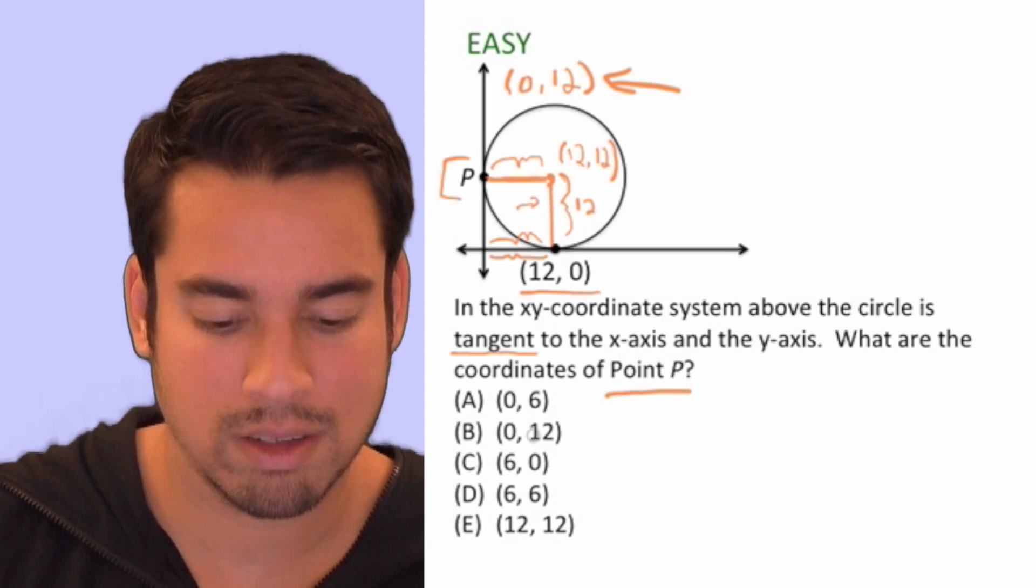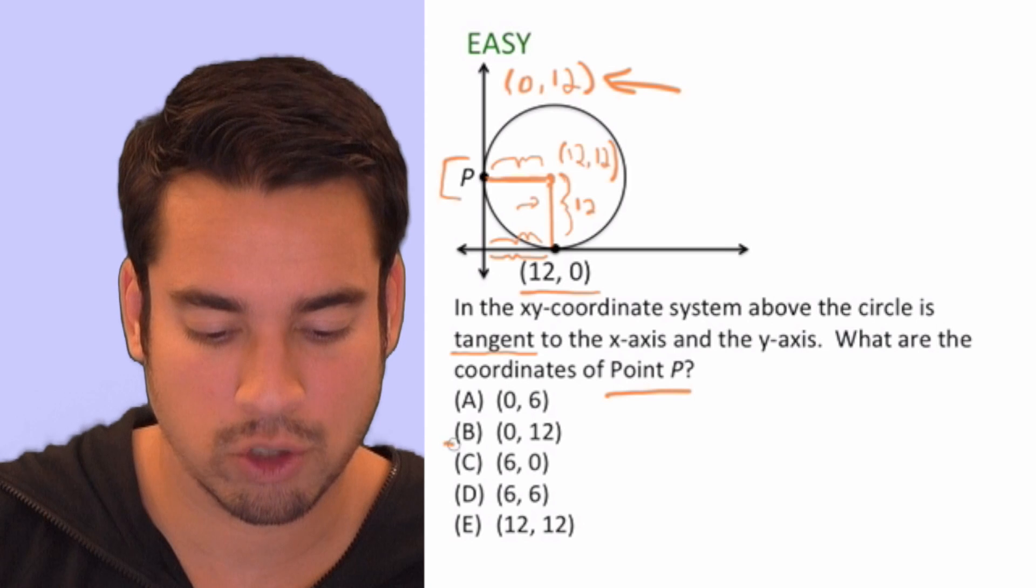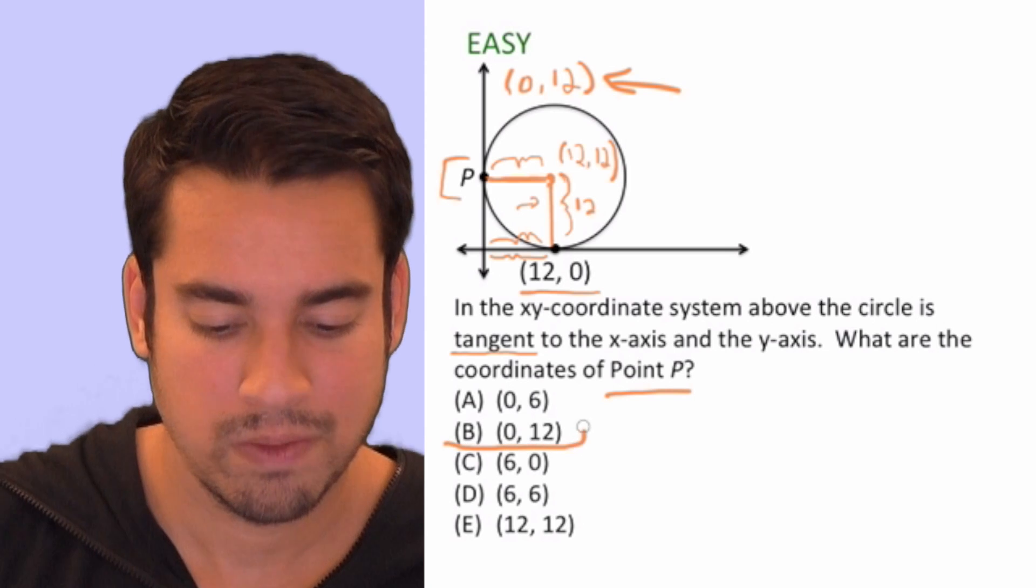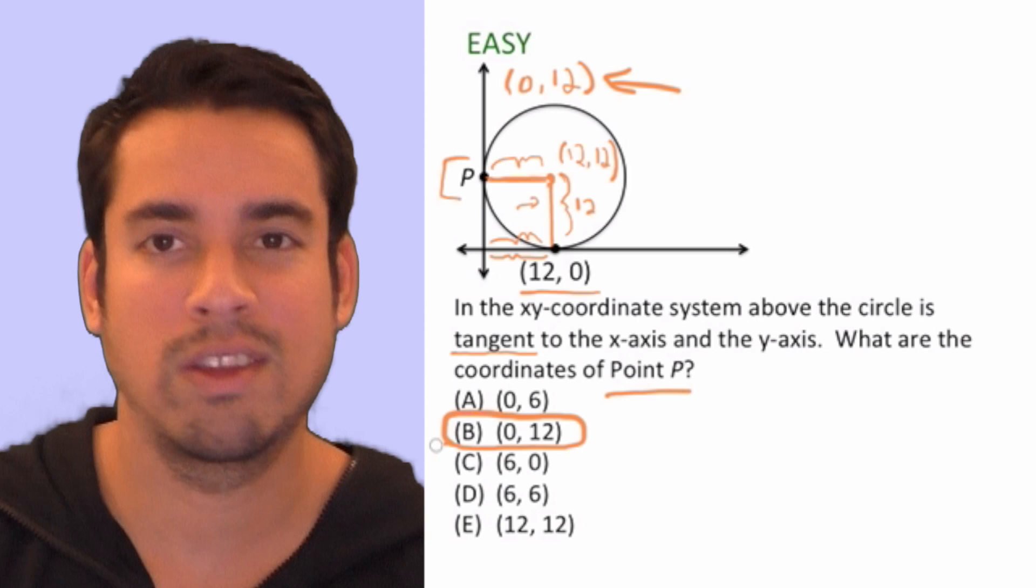So there you have it, there is our value for P. And let's take a look—it's right here, choice number B: (0, 12). Final answer, done.